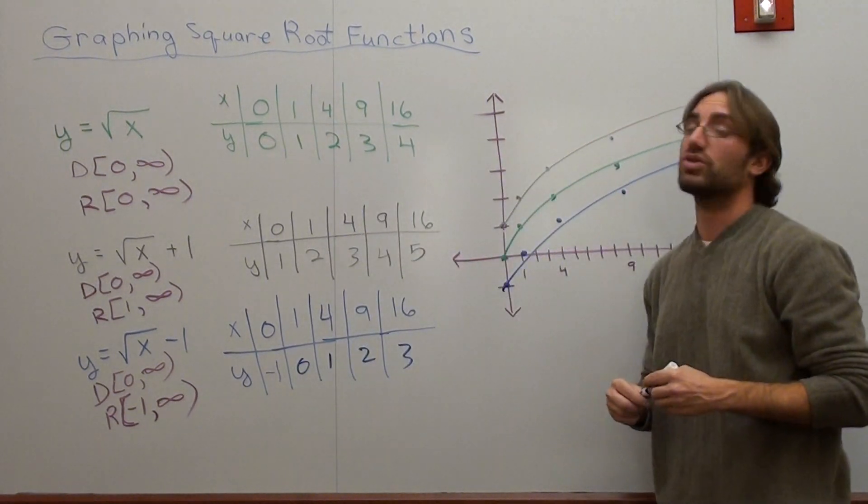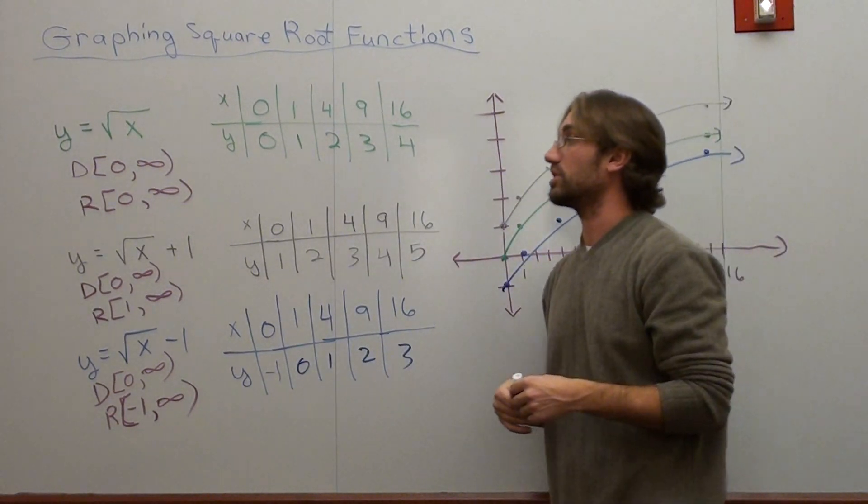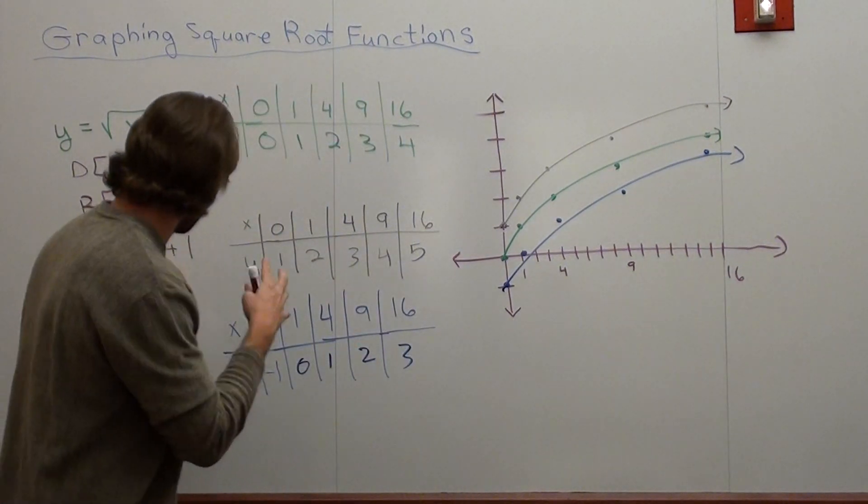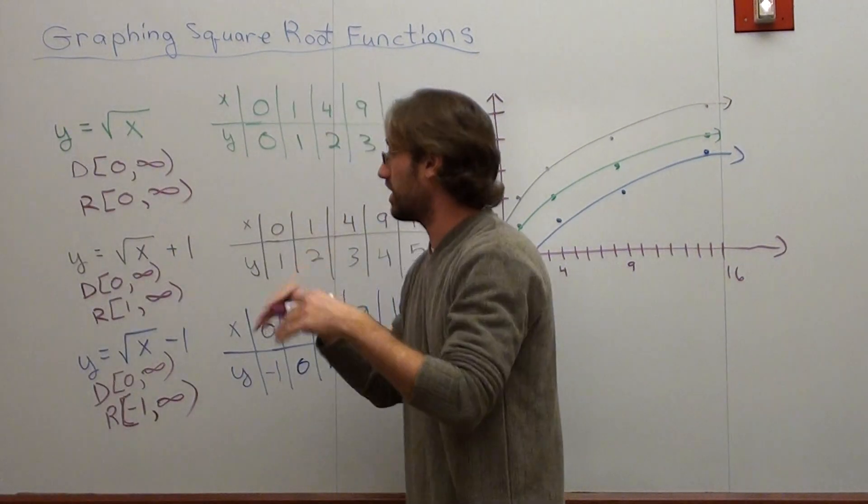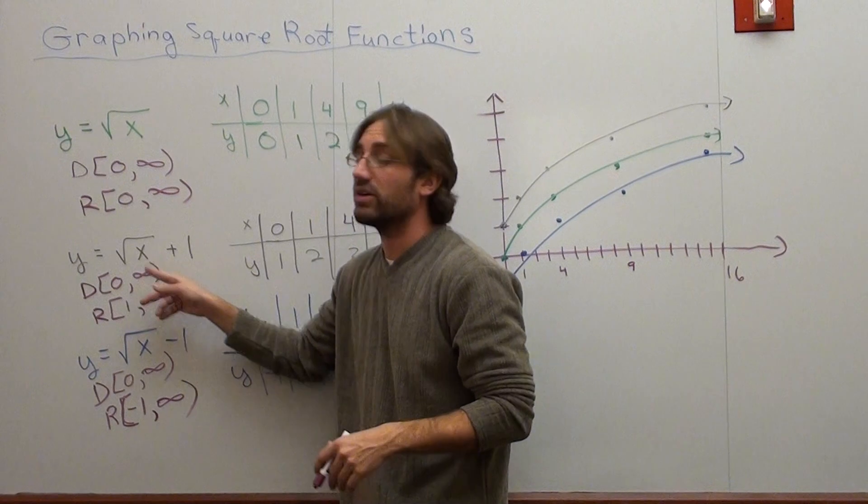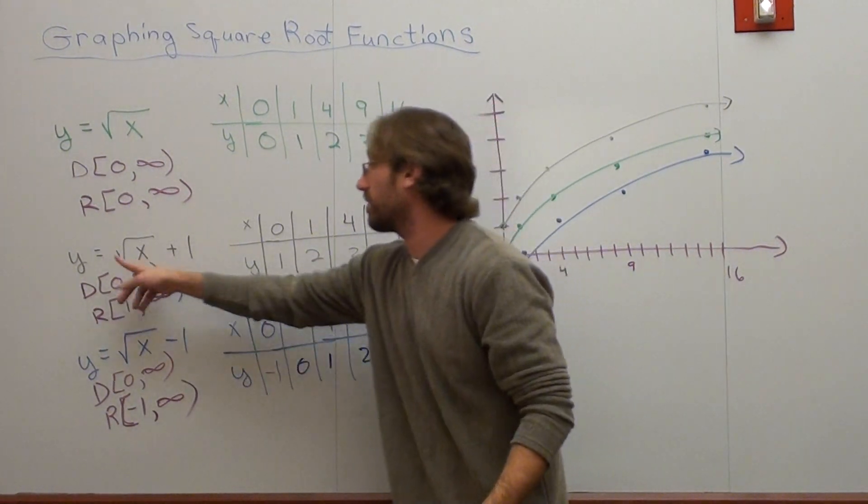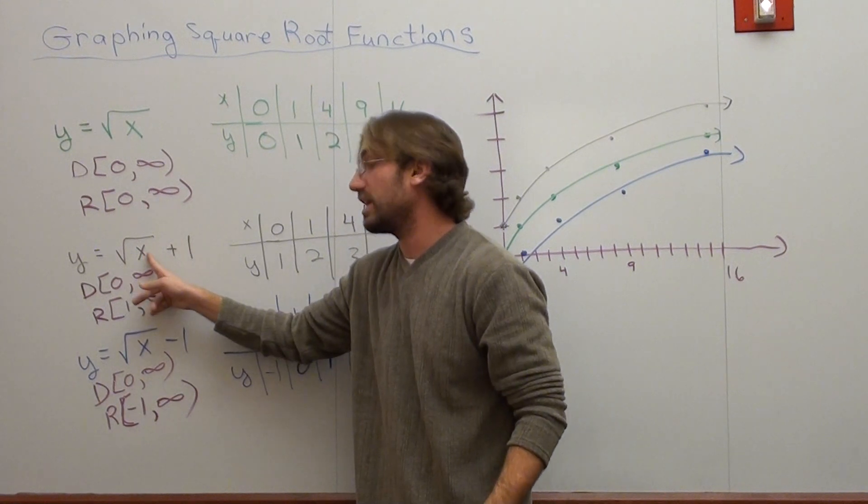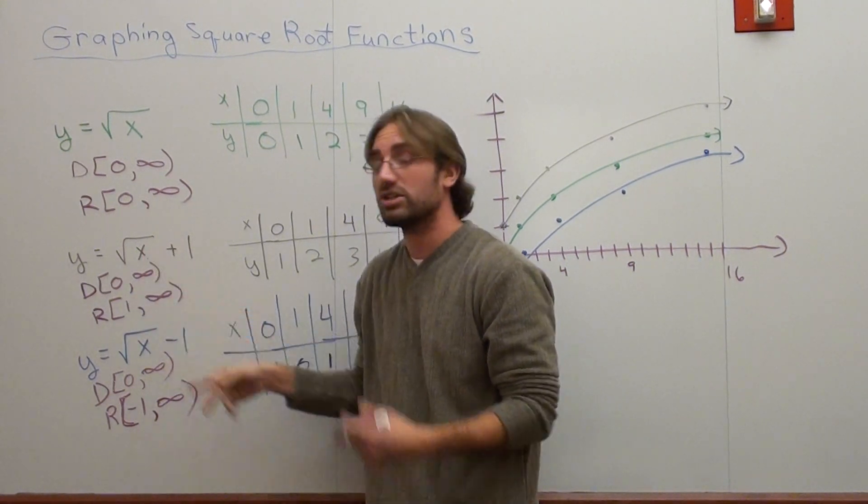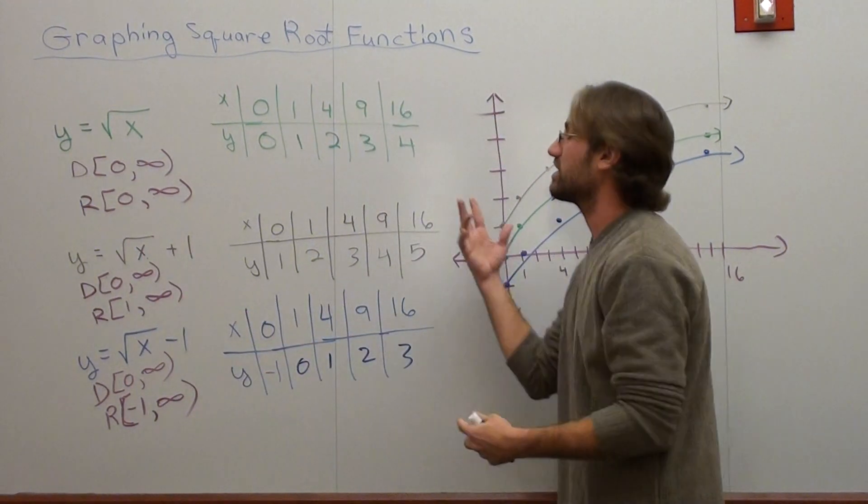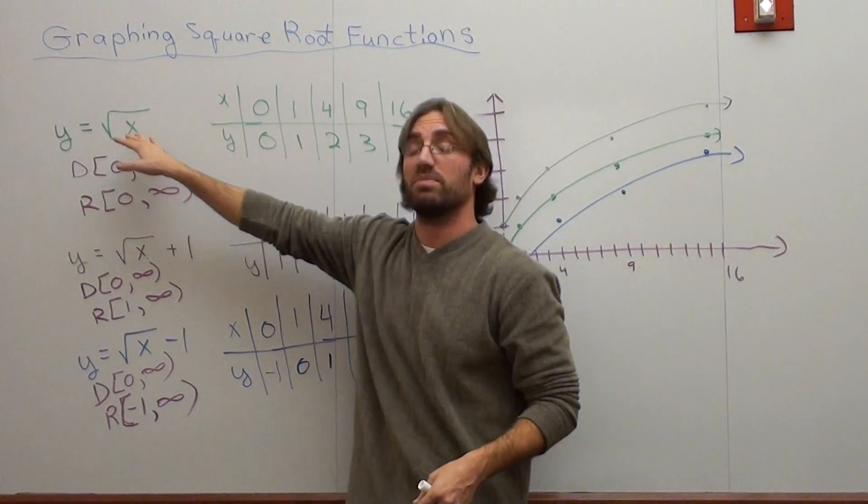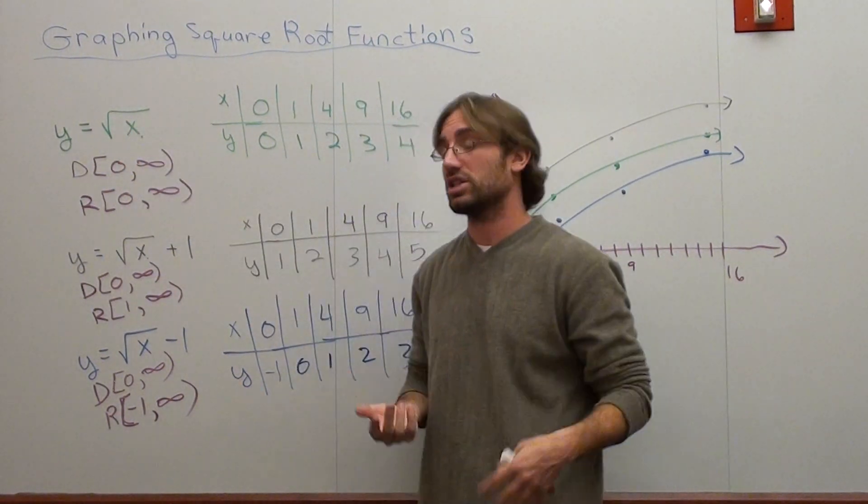So that's a brief introduction into graphing square root functions. It depends. If I have a number after the square root, it shifts it up. If I have a number inside here, I've got to take the opposite and divide it by the number in front of x. And you could have a number in front of the x, something inside the square root with x, and this all at the same time. And you don't really have to sit there and graph it. All you really have to know is what the parent function looks like and adjust it accordingly.